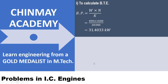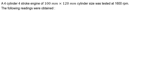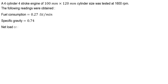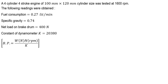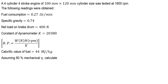In this video, we'll try to understand some typical examples on IC engines. A four-cylinder four-stroke engine having a size of 100 mm × 120 mm was tested at 1600 RPM. The readings obtained are written here: fuel consumption is 0.27 liters per minute, specific gravity is 0.74, net load is 400 Newton, dynamometer constant K is 20,380, and brake power in kilowatt is given as W into N divided by K. Calorific value of fuel is 44 megajoule per kg. We assume mechanical efficiency as 80%, and we have to calculate brake thermal efficiency, indicated thermal efficiency, BSFC, and indicated mean effective pressure.